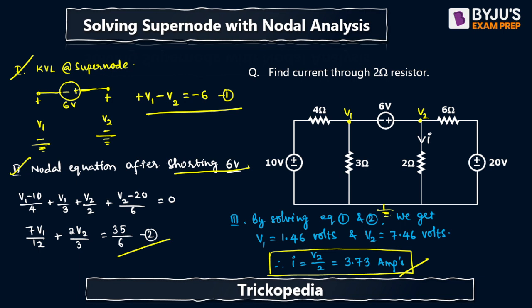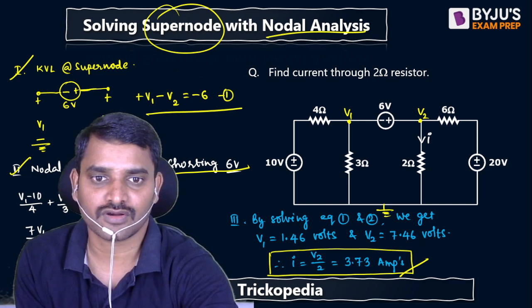Instead of going through this procedure, let us opt a different procedure - that is nodal procedure only. Instead of doing supernode procedure, let us do nodal procedure. So what I do is: instead of assuming the ground at the bottom, I will assume the ground at the top.